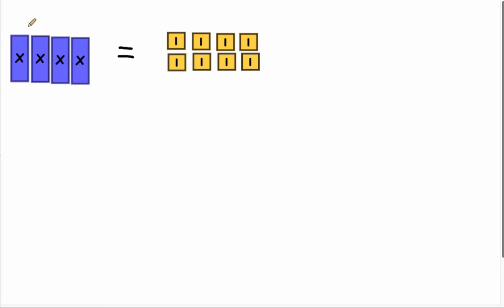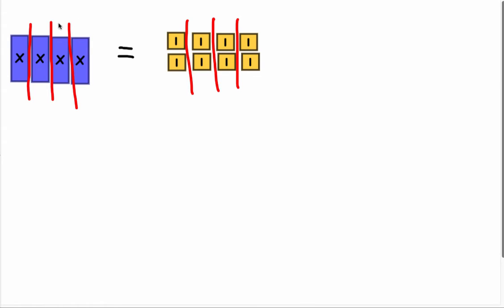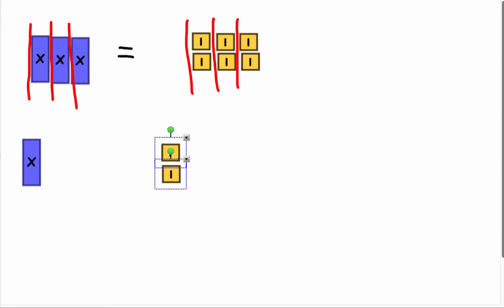We're going to give you that same equation but using algebra tiles. Instead of dollars we have x's, and instead of bananas we have ones, which add up to eight. The same thing is going to happen: if I divide these x's into four groups and divide these ones into four groups, we can see that x is equivalent to two ones, or we could call that two. So x equals two.